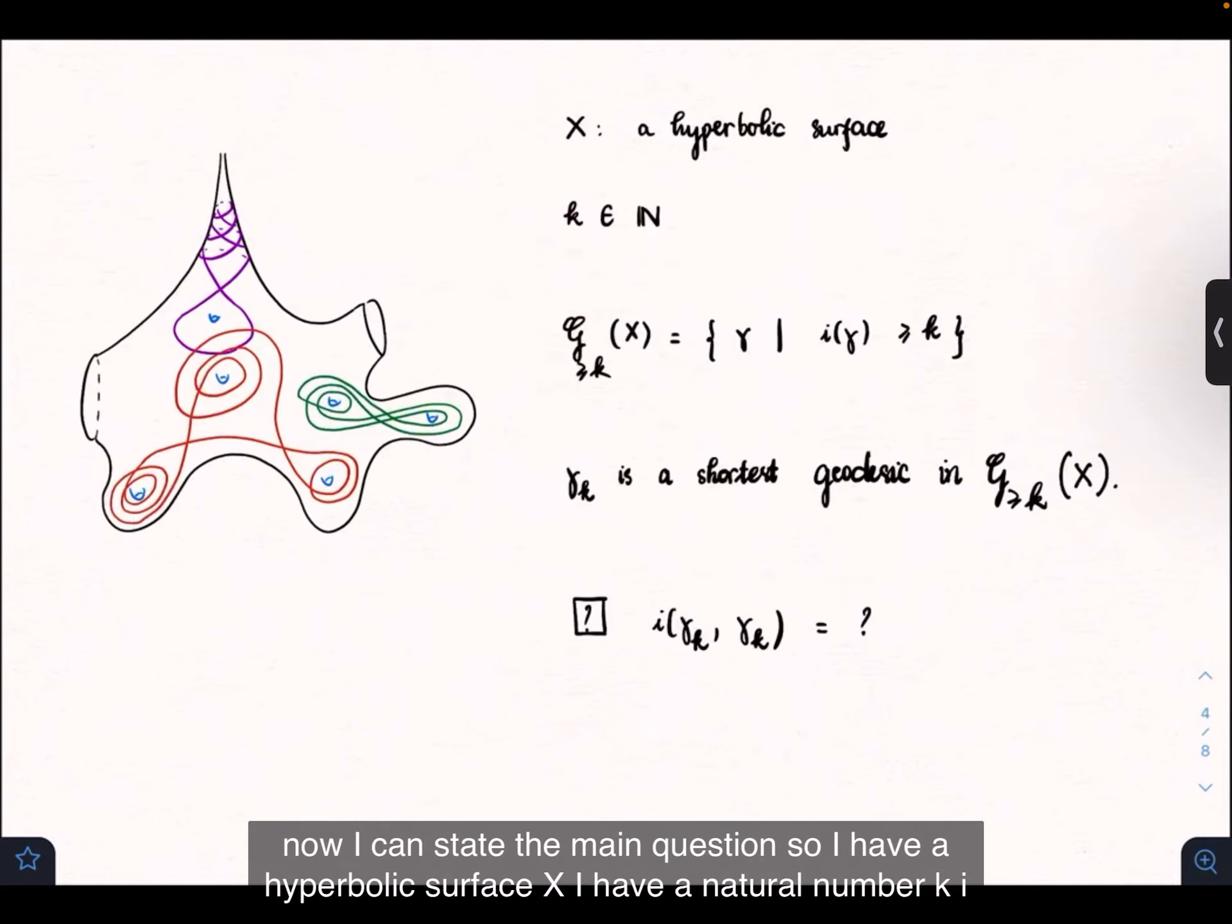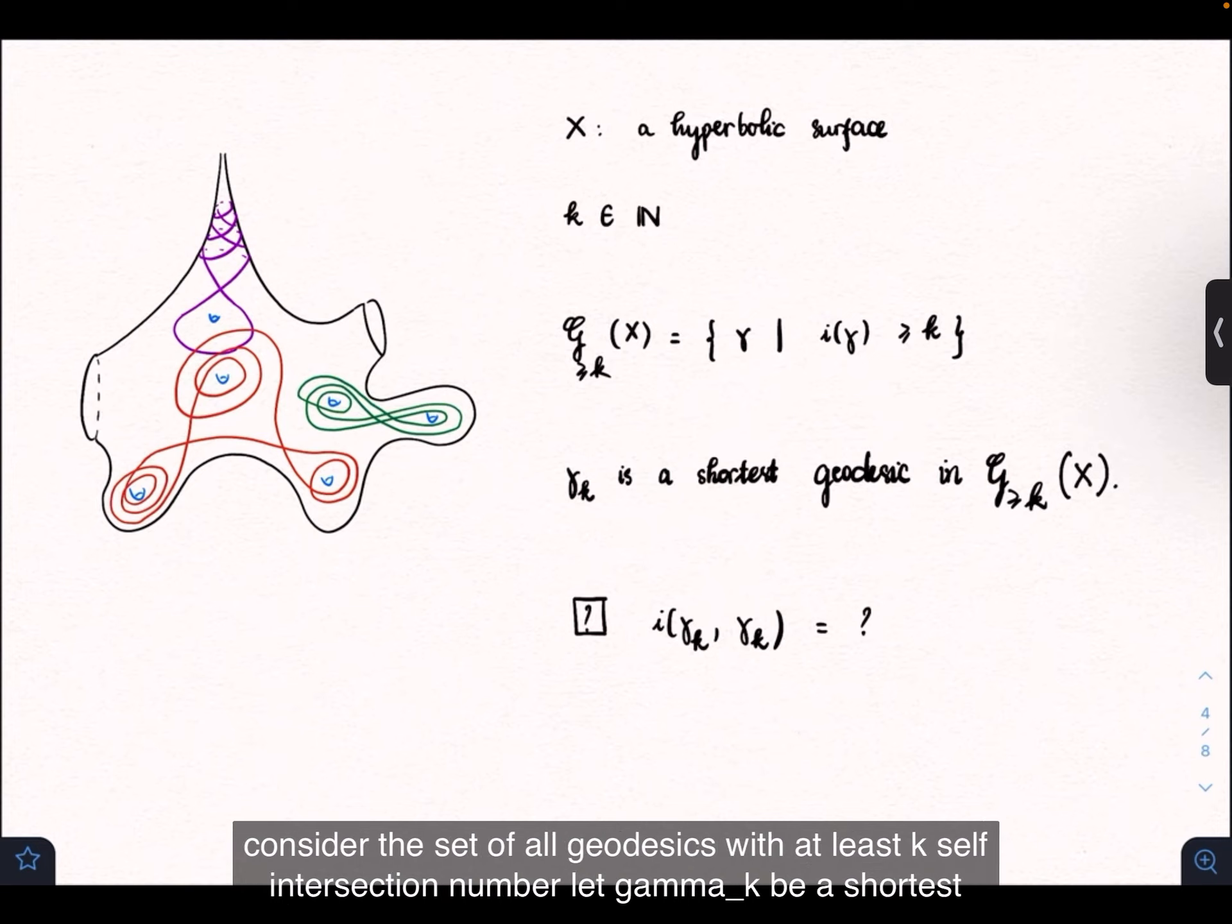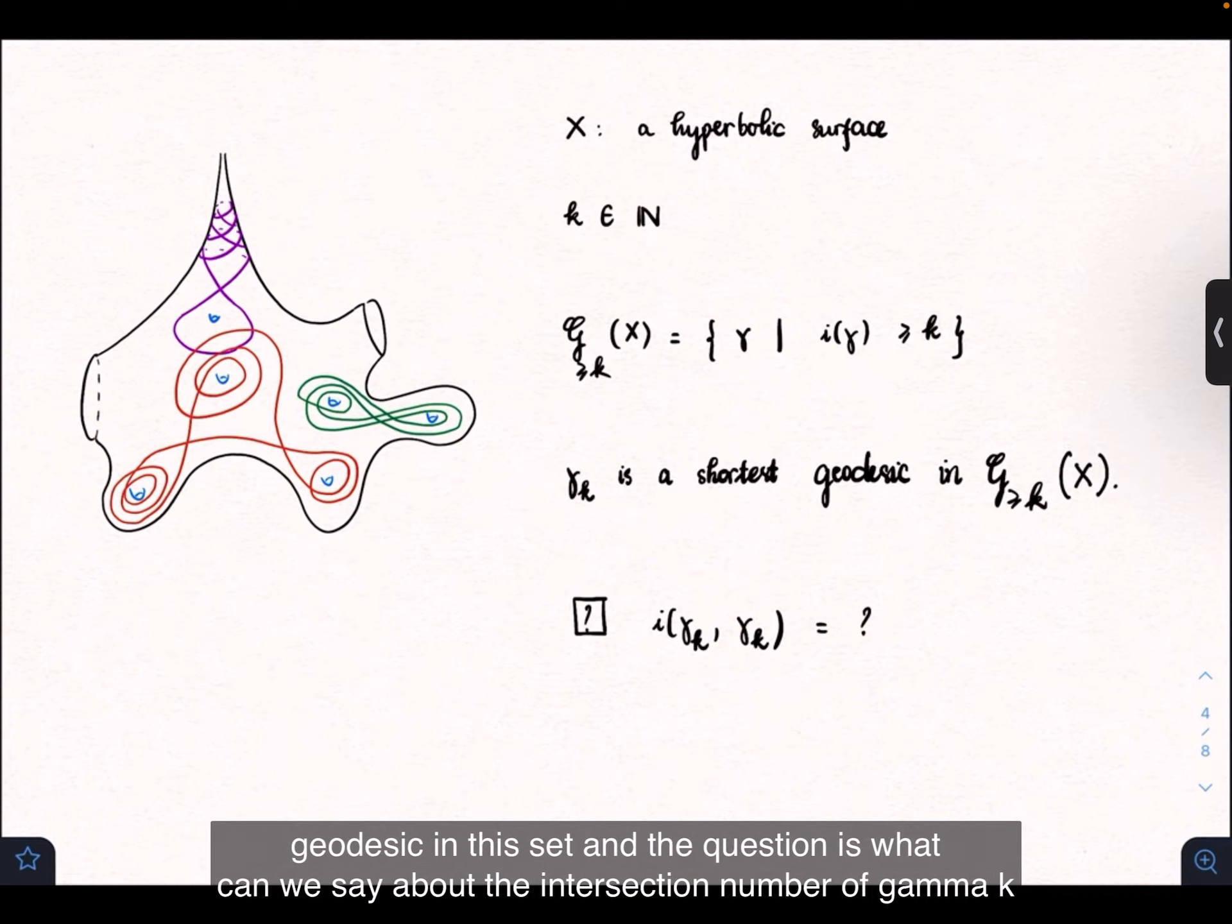Now I can state the main question. I have a hyperbolic surface X and a natural number K. I consider the set of all geodesics with at least K self-intersection number. Let gamma_K be a shortest geodesic in this set. The question is, what can we say about the intersection number of gamma_K?